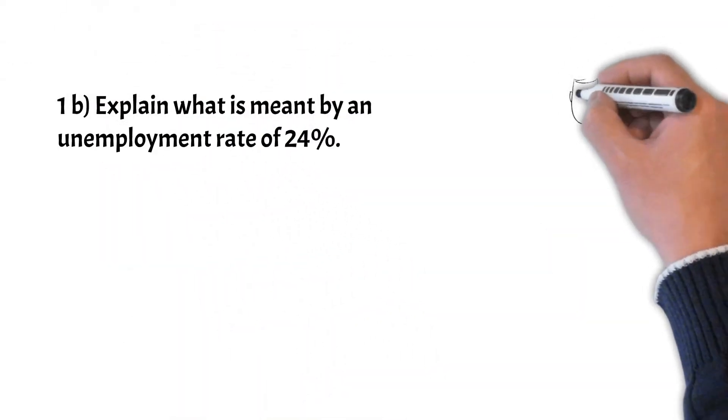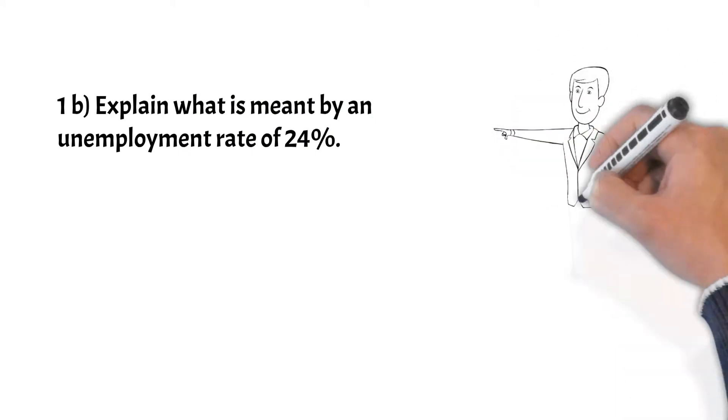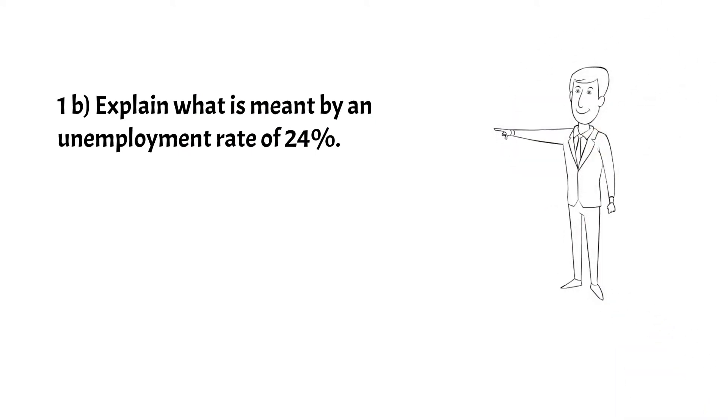Next, question 1b: explain what is meant by an unemployment rate of 24%. Okay, they want a definition. 24% of the total labor force is actively searching for jobs but cannot find it. These people are willing and able to work.